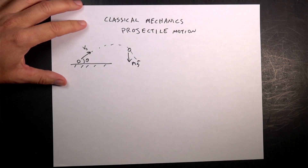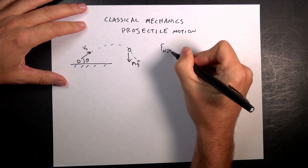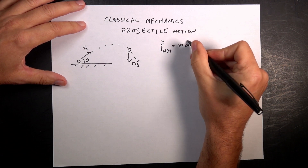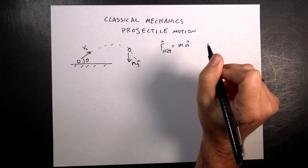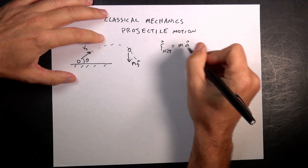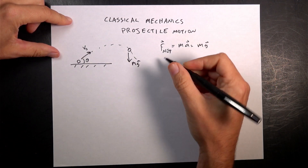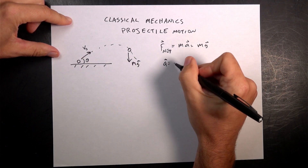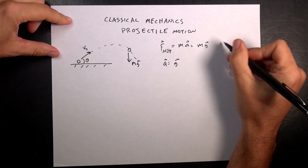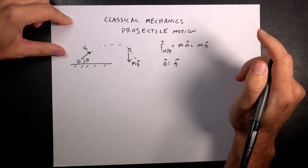So let's start with Newton's second law. It says F net vector equals ma, and in that case this is equal to the only force, the gravitational force mg. So I have a equals g, and g is the gravitational field vector — it does have a negative y component. I just want to make sure you're okay with that.